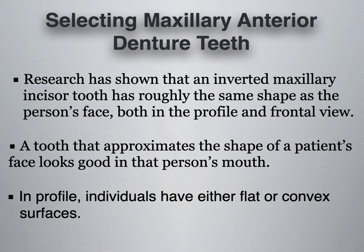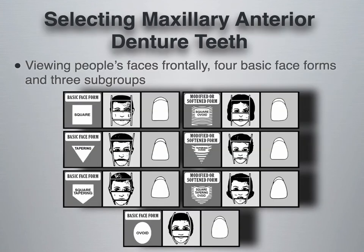Research has shown that an inverted maxillary incisor tooth has roughly the same shape as the person's face, both in profile and frontal view — a tooth that approximates the shape of a patient's face looks good in that person's mouth. In profile, individuals either have flat or convex surfaces. The Air Force Manual discusses different types of face forms, though there is other research that almost disproves this theory. The professor notes that for someone severely overweight, face shape changes and skeletal structure may be a better guide than overall face shape when selecting tooth molds.